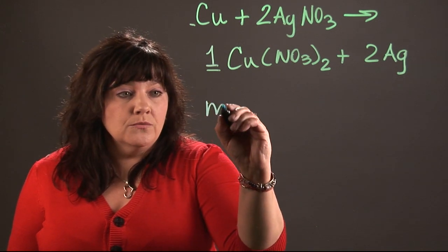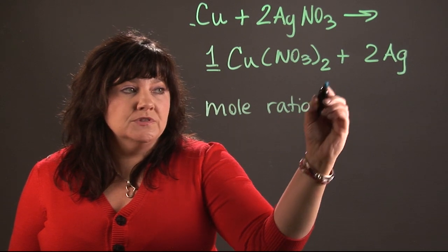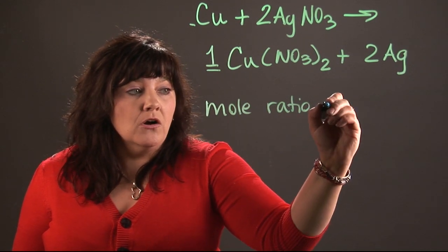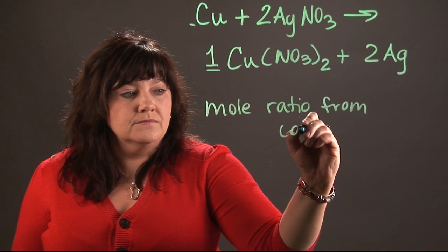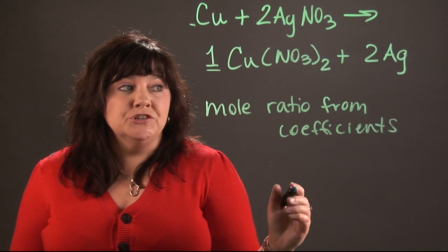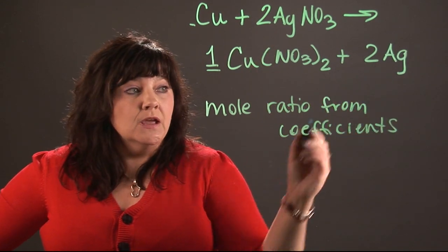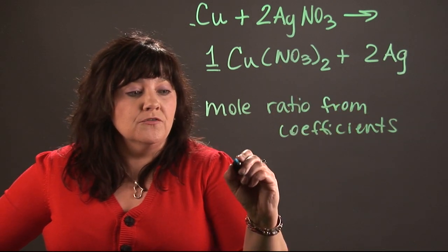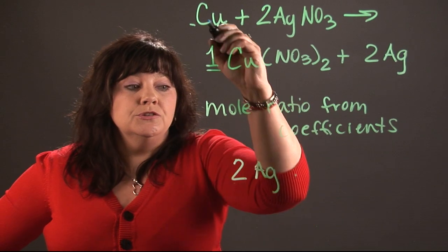So the mole ratio actually comes from these numbers, which we call coefficients. So if I wanted to get the ratio of copper to silver, I would look at the numbers that are in front of it. So the mole ratio for copper to silver would be 2 to 1.